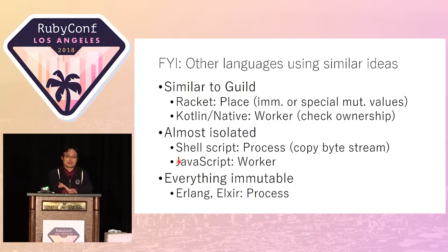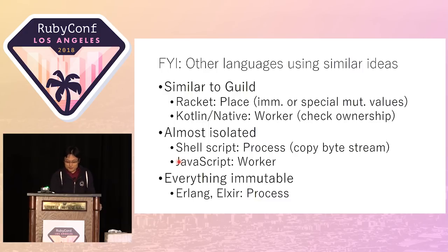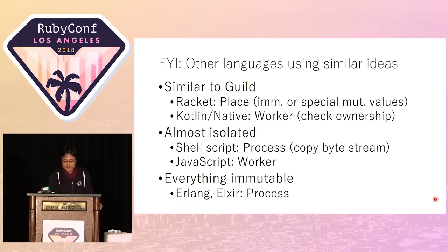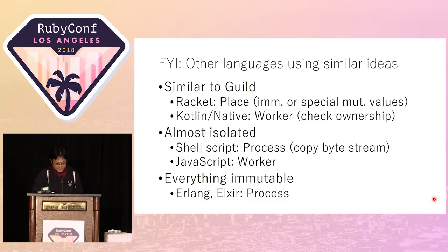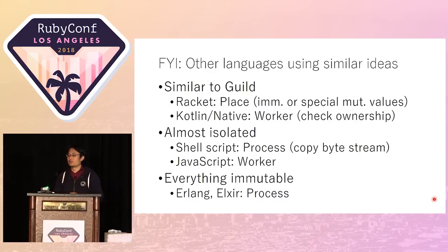Other languages use similar ideas. Several languages introduce limitations on sharing state, or a shared-nothing model. Examples include the Pony programming language, Kotlin native, Elixir, JavaScript workers, and Erlang's actor processes. The names and models are different but the similar idea is used. I think this approach is not wrong.